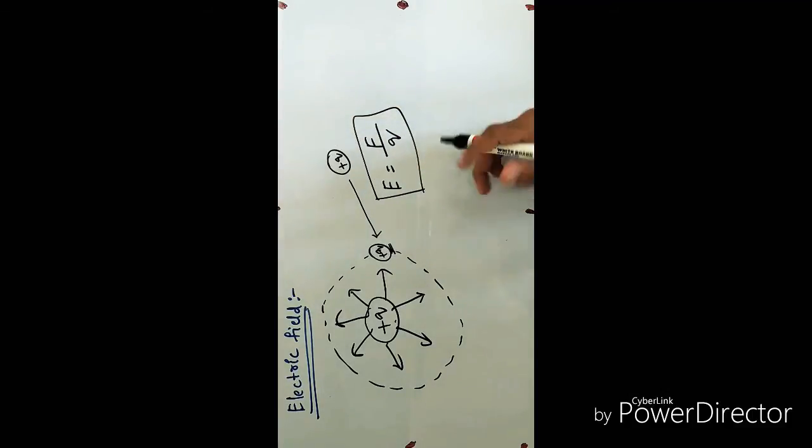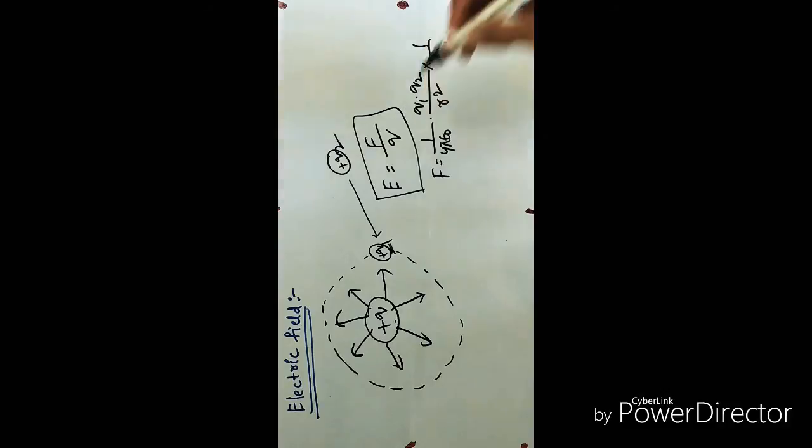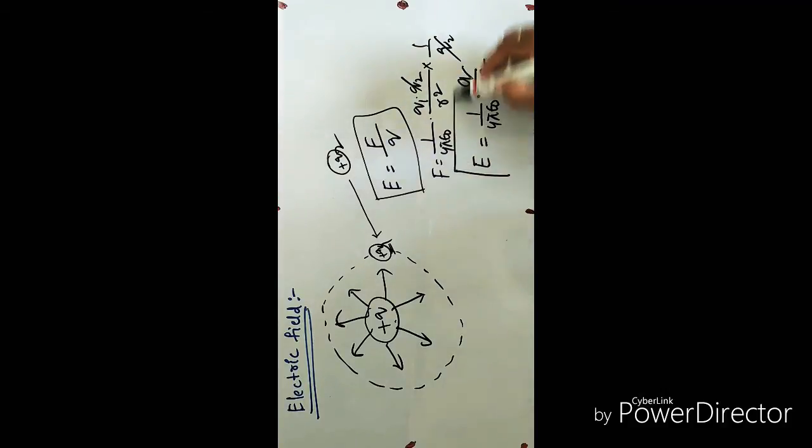So simply we can write, we know that force equal to 1 by 4 pi epsilon times the magnitude of their charges by square of the distance between them. So if you now divide this with the point test charge, this is nothing but Q1, Q2, let us suppose.